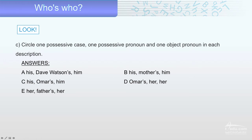For description C: 'his' is the possessive pronoun, 'Omar's' is the possessive case — for example, Omar's picture or Omar's school — that belongs to Omar. And 'him' is the object pronoun — this card belongs to him. 'His' means belonging to him, so we call it a possessive pronoun.